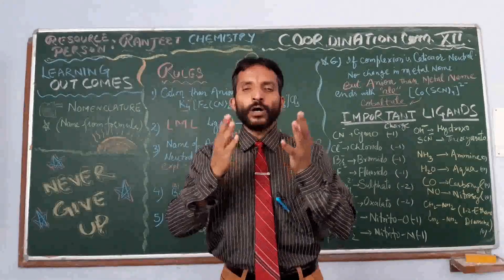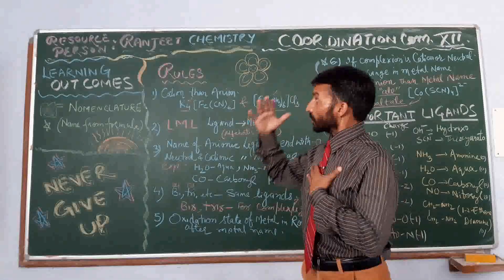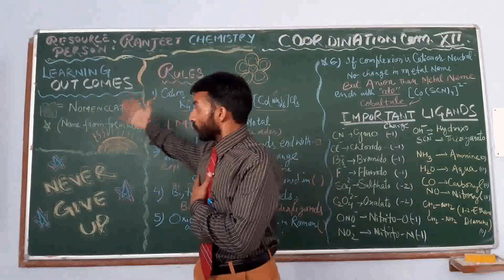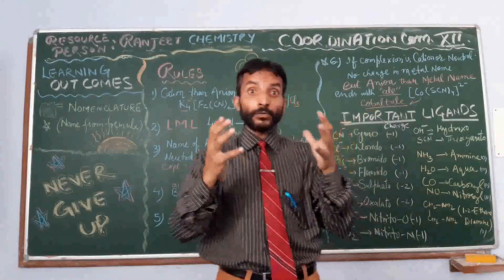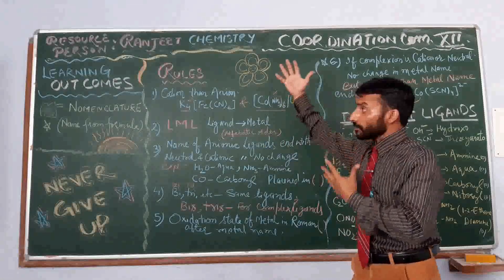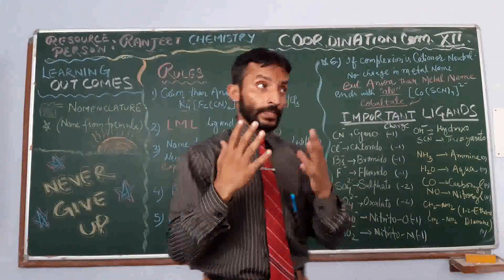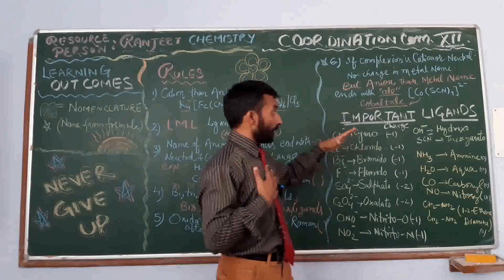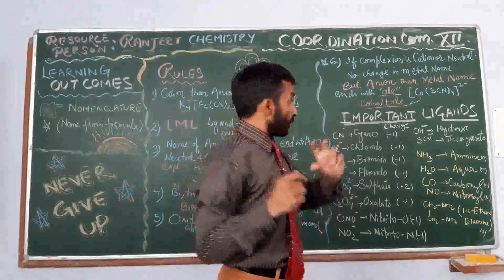Welcome to all my wonderful learners. Today I am here to discuss the chapter on coordination compounds. Our learning outcome is nomenclature — how to write the name of a coordination compound from its formula. We have some rules we have to follow to write the name, and then we will learn some important ligands, and after that we will solve some examples.